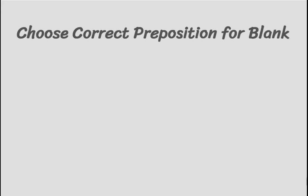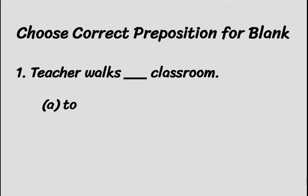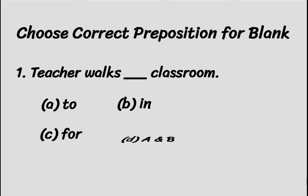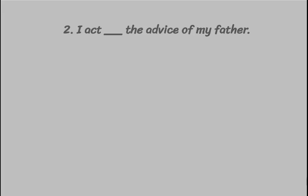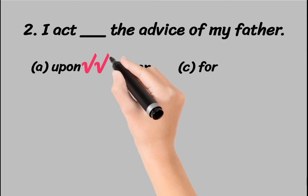Now we are on the fourth section: choose the correct preposition for the blank. Every question has a blank to fill with a preposition. The first question is 'Teacher walks ___ classroom.' Options: A — to, B — in, C — for, D — to and in. In this situation, both 'to' and 'in' can be possible, so option D is correct. The second question is 'I act ___ the advice of my father.' Options include 'upon,' 'on,' and 'for.' Act upon is the suitable preposition here, so option A is correct.